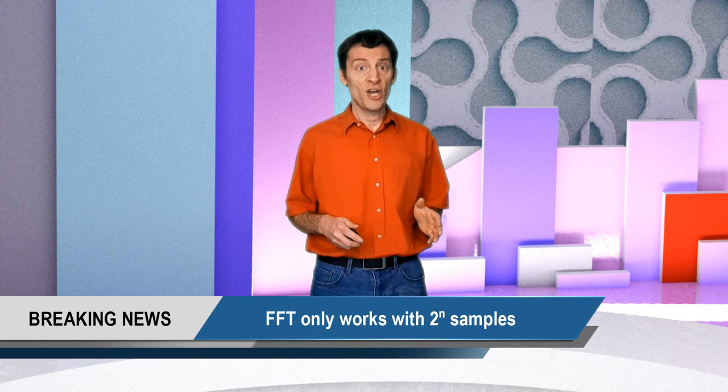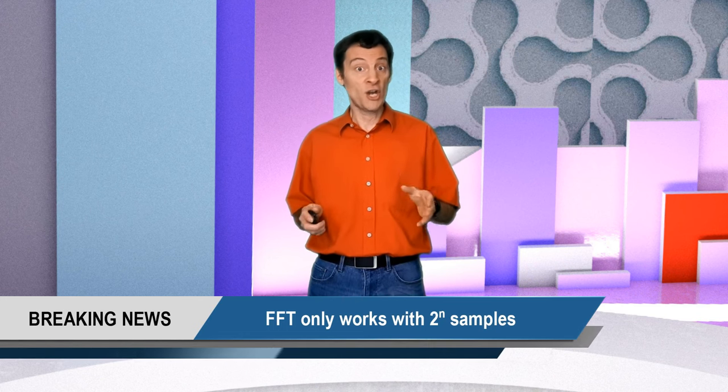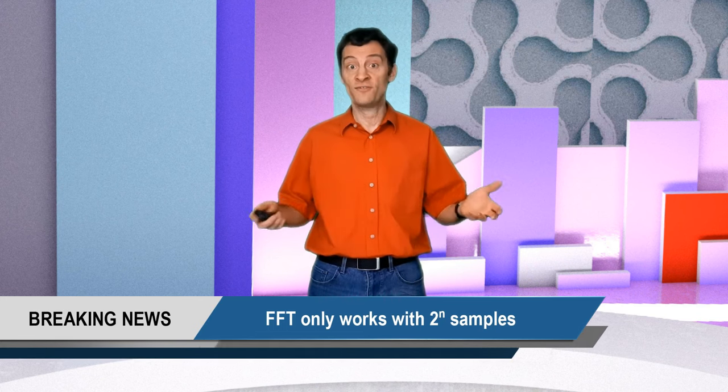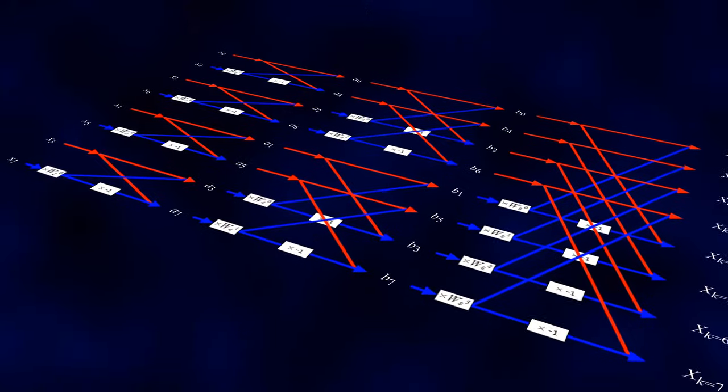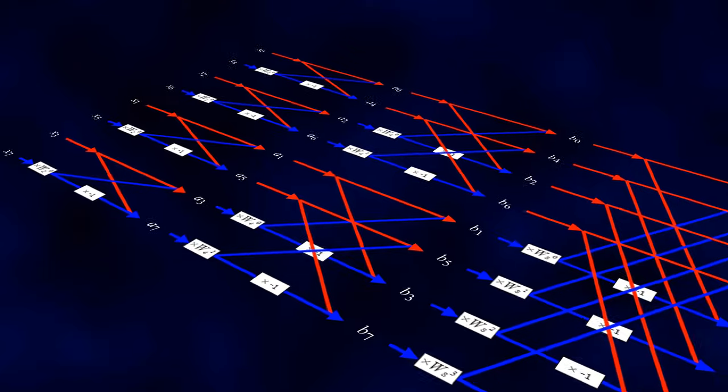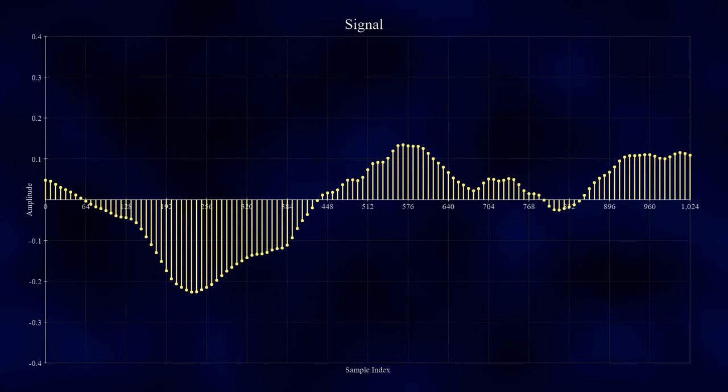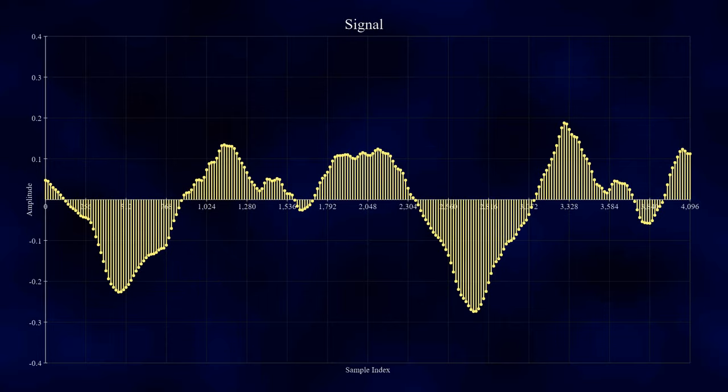In order for the FFT to work, your signal must contain a number of samples that is a power of 2. It's this property of your signal that makes the fast Fourier transform fast. A signal containing 1,024 samples? No problem. 4,096 samples? A cinch.